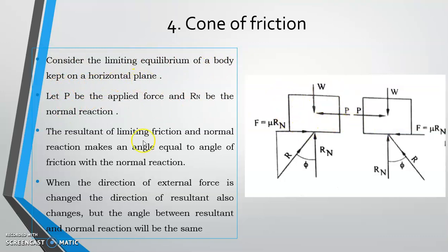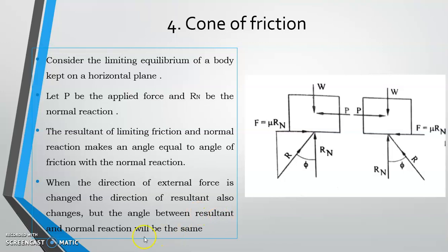Consider the limiting equilibrium of a body on a horizontal plane. Let P be the applied force and Rn be the normal reaction. The resultant of limiting friction and normal reaction makes an angle equal to the angle of friction phi with the normal reaction. When the direction of external force P changes, the direction of the resultant also changes, but the angle phi remains the same.